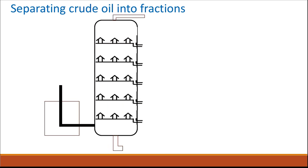Crude oil is the main source of different alkanes. Crude oil in itself is not useful, so we need to separate its different fractions, because it contains a wide variety of alkanes ranging from one carbon atom like methane and two carbon atoms like ethane, up to more than 50 carbon atoms. To separate these fractions, we use fractional distillation.